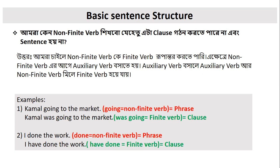Example 2: 'I have done the work.' Here 'I' is the subject, and 'done' is the verb. Is 'done' finite or non-finite? 'Done' is non-finite. So is it a clause? No — it's a phrase. But the auxiliary verb 'have' combines with the non-finite verb 'done' to create the finite verb 'have done.' With 'I' as subject and 'have done' as the finite verb, it becomes a clause and therefore a sentence.